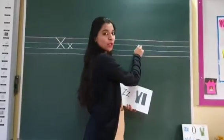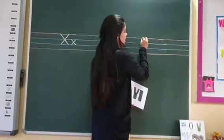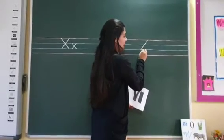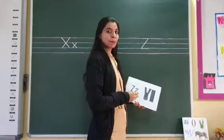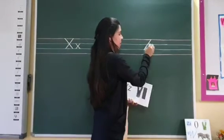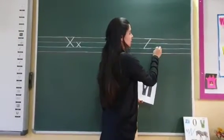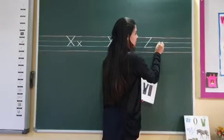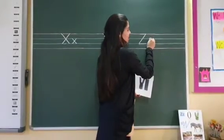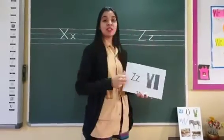Here we have got red and blue lines with us. We will start writing from the first red line to the second blue line. Sleeping line on the red line, slanting line towards the second blue line, and again a sleeping line gives us capital Z. Once again — sleeping line, slanting line and one more sleeping line gives us capital Z. In the same way, we write small z between the blue lines. Sleeping line, slanting line and again a sleeping line gives us small z.